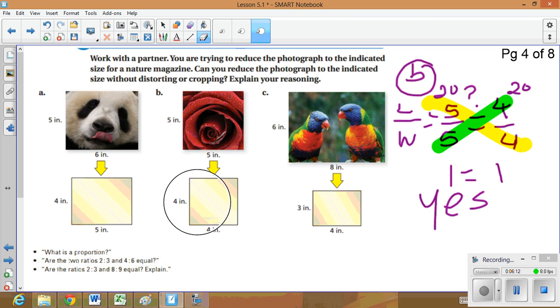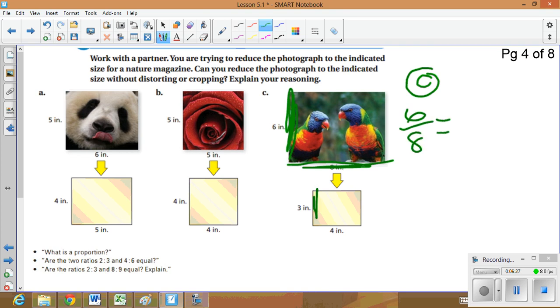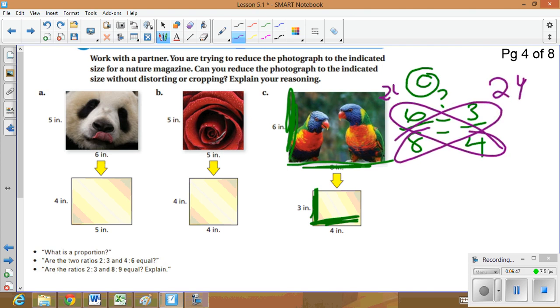Again, I'm going to erase. If you need to copy anything down, just go back and rewind a couple seconds and pause. Alright, part C, I have this picture of these parrots. It's a 6 by 8 length to width. And I'm going to compare it to, I need to reduce it to a 3 by 4. And I want to see if it can remain proportionate. Is 6 over 8 equal to 3 over 4? So again, we're going to do cross product. So 8 times 3 is 24. 6 times 4 is 24. So since our cross products are equal, the ratios are proportionate. So the answer is yes for part C.